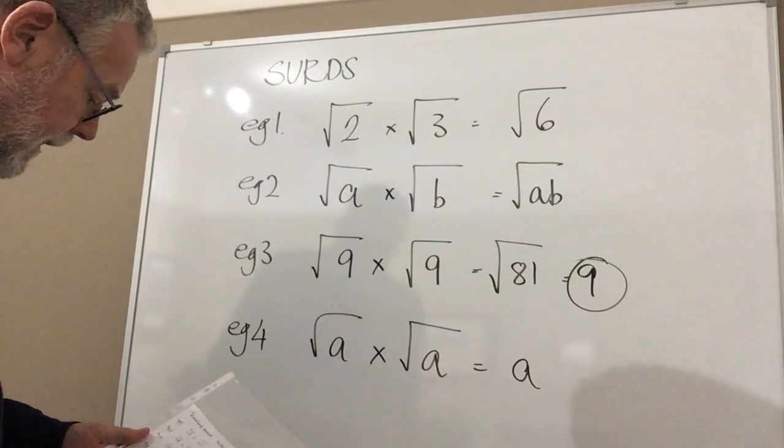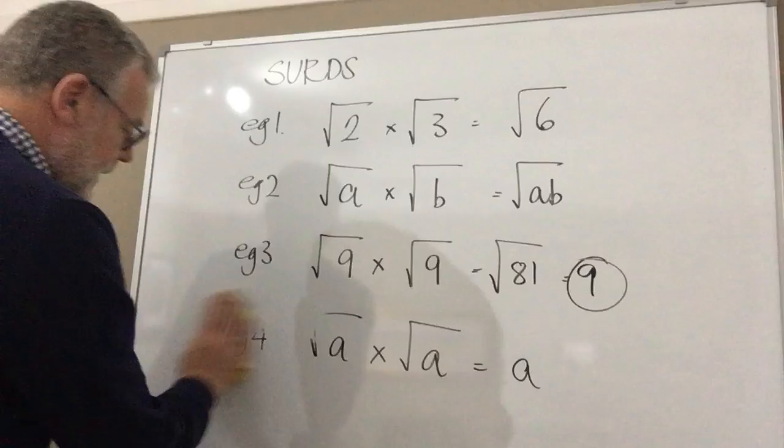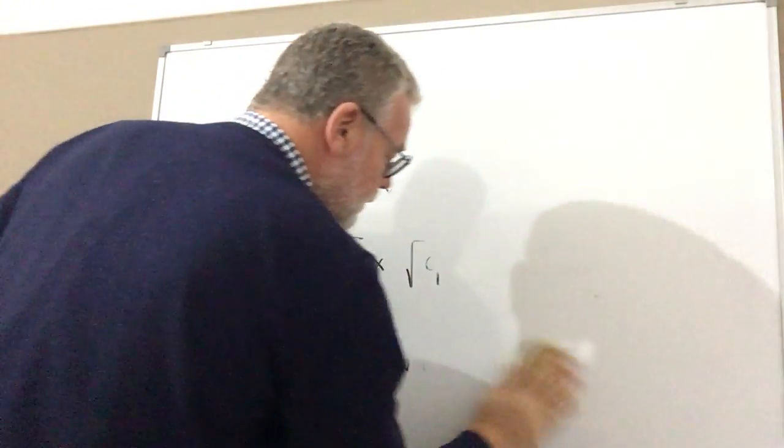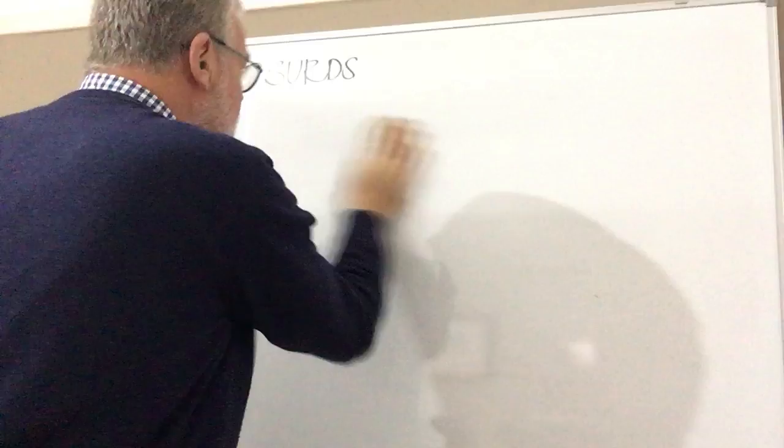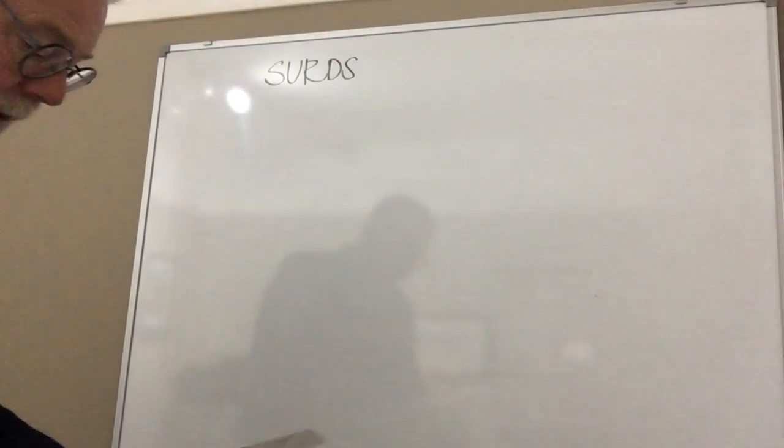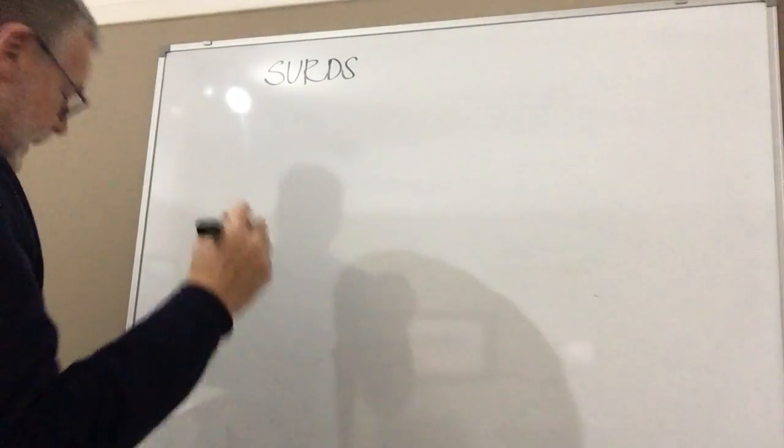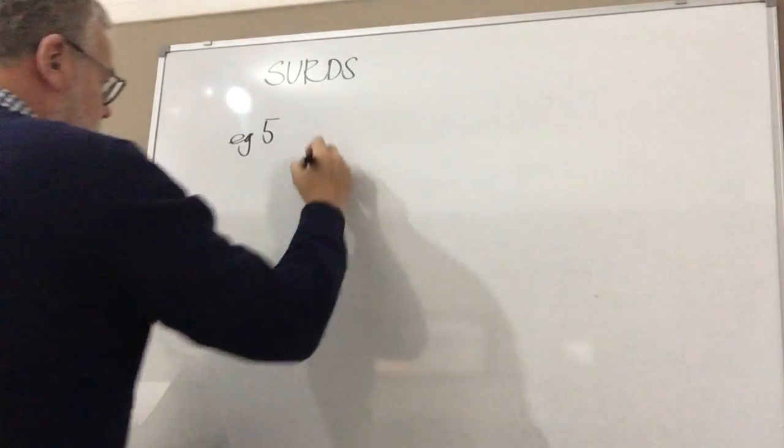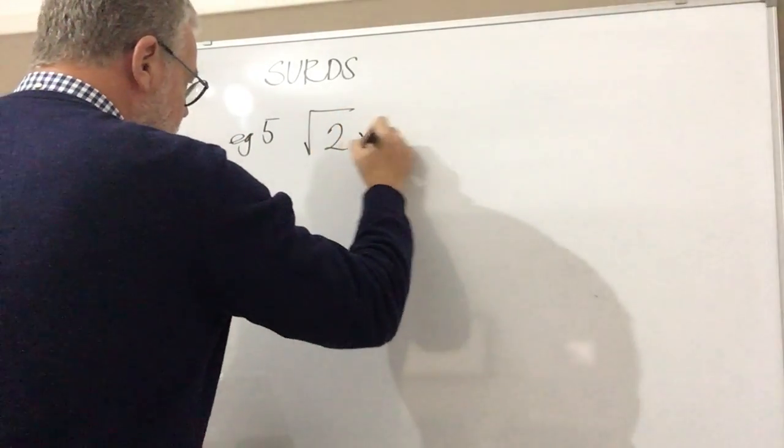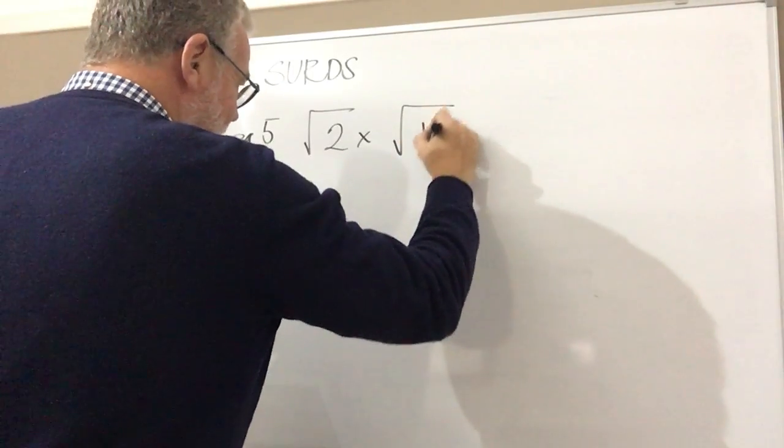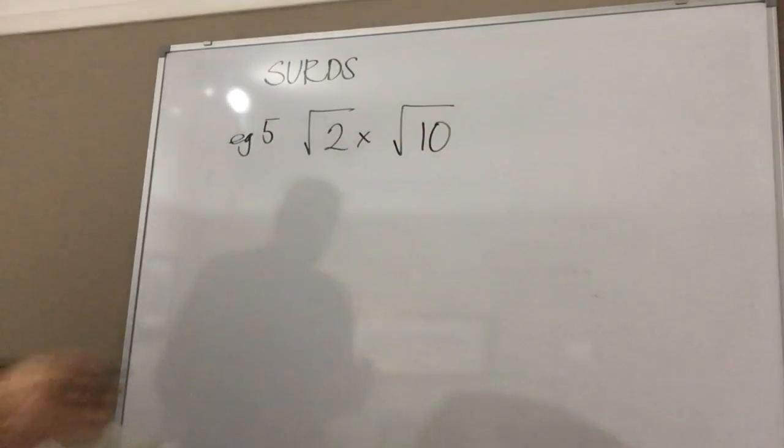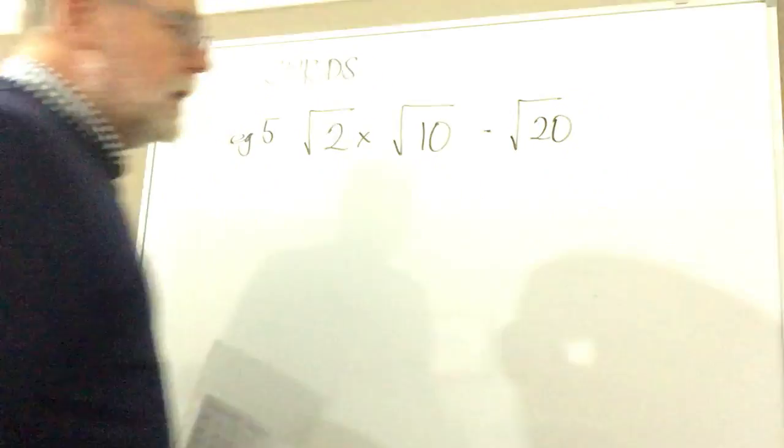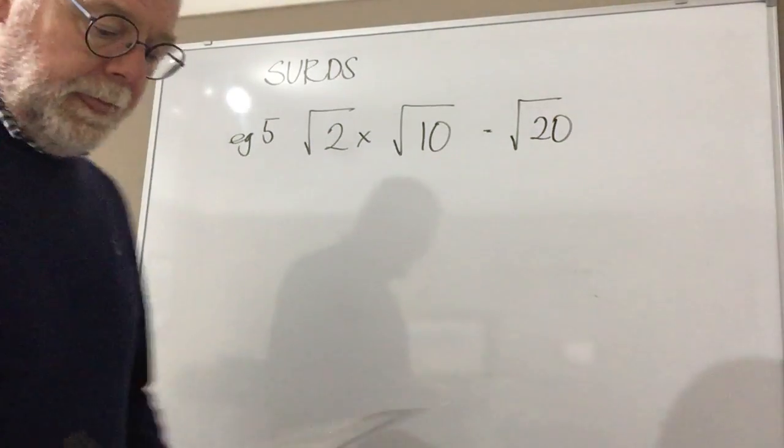Now let's have a look at the next example. This is another interesting one, particularly when we're still thinking about multiplication but we're thinking about what's going to happen when we simplify. Now so let's have a look, we'll call this example number 5 and I've got root 2 multiplied by root 10. Now again we know what the answer is going to be, it's root 20, but we can't leave it there this time.